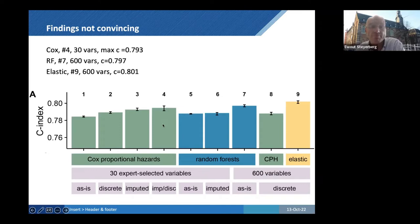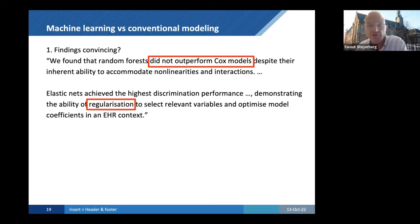That's actually their conclusion. The authors write, we found that random forest did not outperform Cox models. Elastic nets achieved the highest discrimination with regularization, penalty terms to select relevant variables and optimize model coefficients. The authors themselves were modest in their conclusions, while the media exaggerated like AI beats doctors. It's also a question, where are the doctors here? There are no doctors. It's all statistical learning. The findings were not convincing.